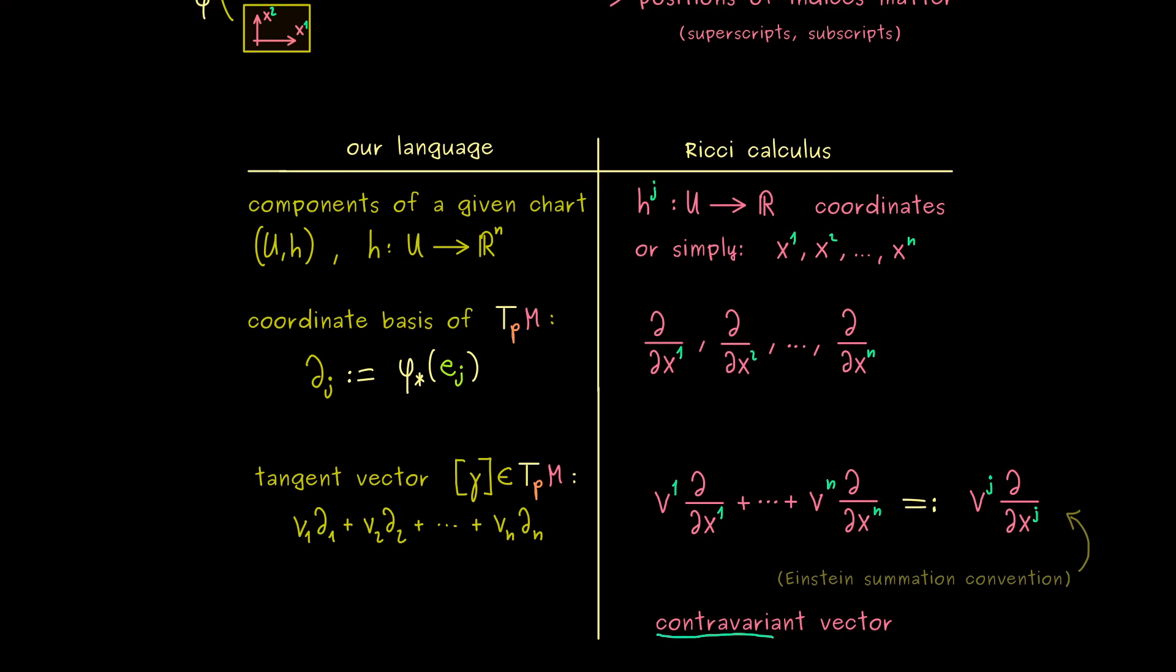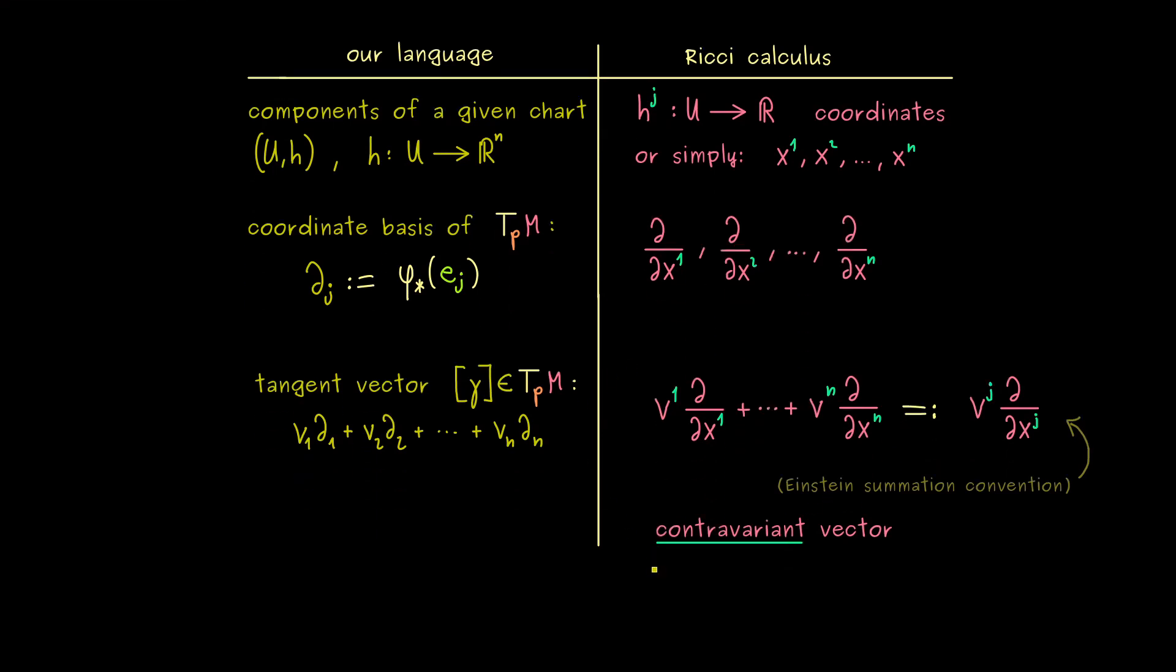And the opposite will be a so-called covariant vector. Now the two names come from the fact that the two vectors transform differently under some transformations, but we can just remember we have superscripts and subscripts now. And moreover, we will also go into more details for the names later. For the moment you can just remember that a tangent vector is called a contravariant vector in the Ricci calculus.